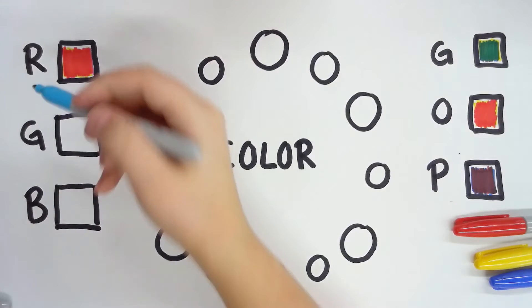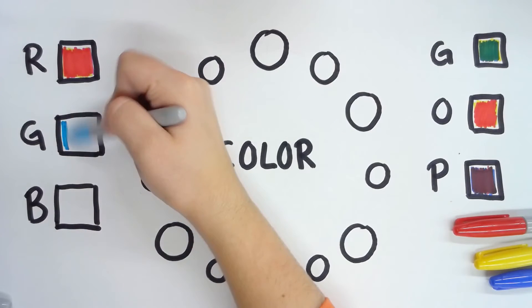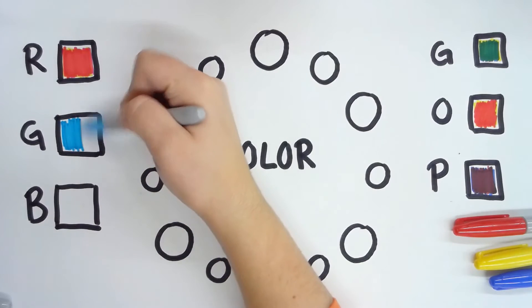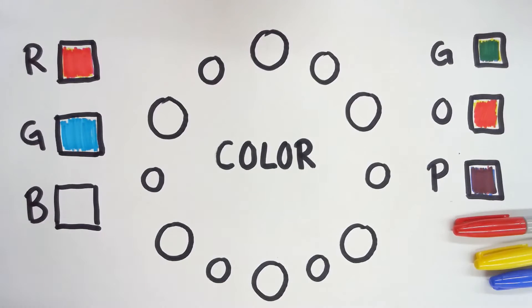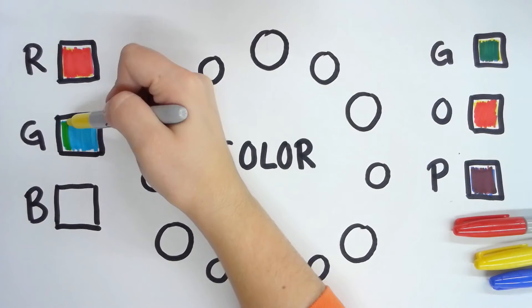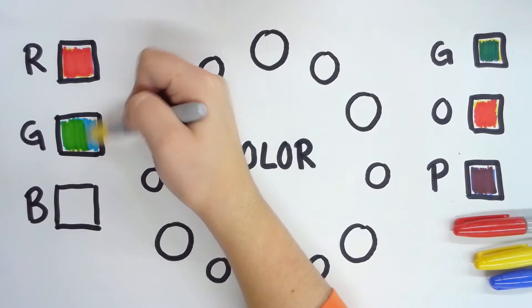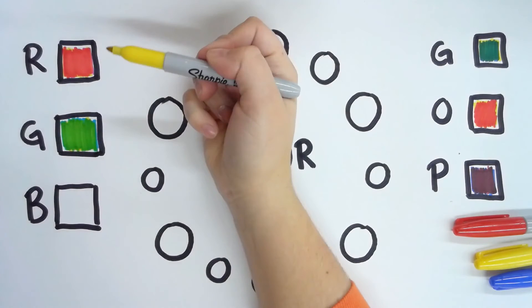How about green? Green is some cyan. Fill that up really nice. And let's add some yellow. And would you look at that? It made green.